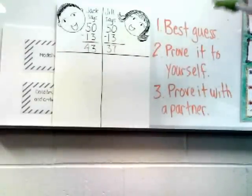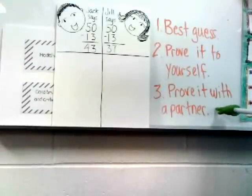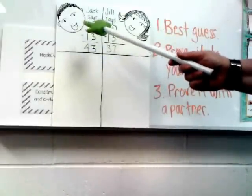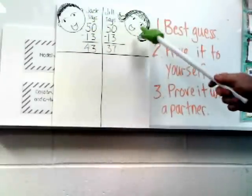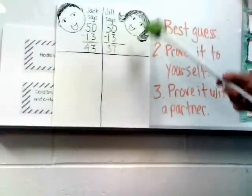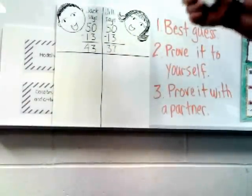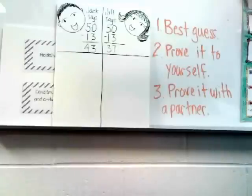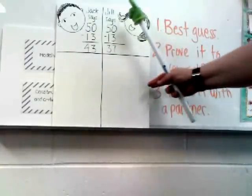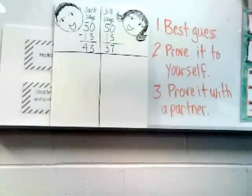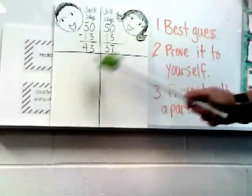Once every student has had a chance to show at least one way to solve the problem, they have to prove it with a partner. If you have an equal number of Jacks and Jills, it's very easy — just have all of your Jacks stand up and have them each pick a Jill partner. Each partner tries to prove to the other that their way is right. If you have an overabundance of one side, have kids get together in groups or two teams. You really want them to focus on constructing viable arguments and critiquing the reasoning of others. Again, at this point, if students feel their partner convinced them they were wrong, they can move their names back and forth.